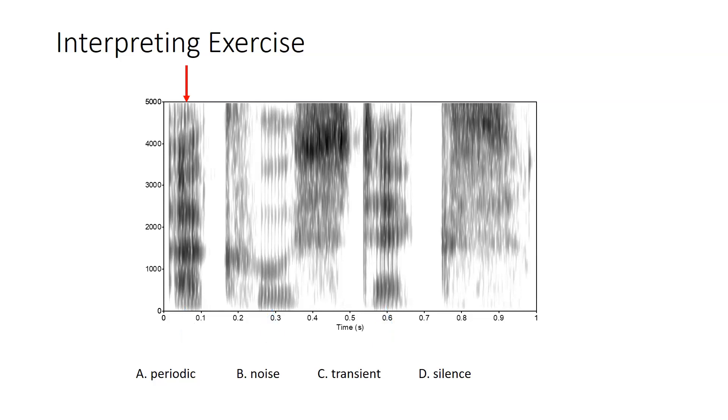So, looking at this particular spectrogram, the first region over at the left has some dark vertical stripes in it that appear to be regularly spaced. So, we would guess that that is a periodic speech sound.